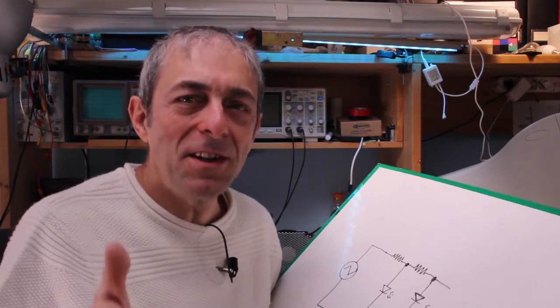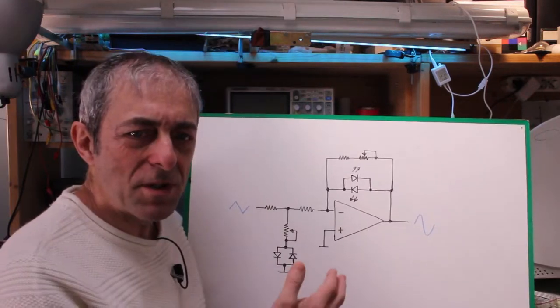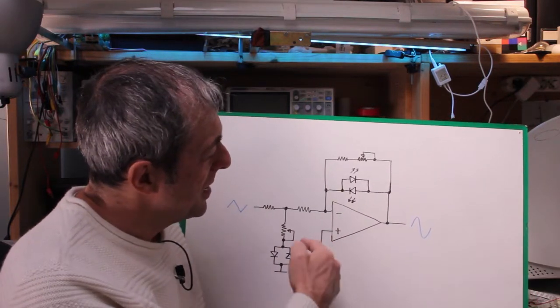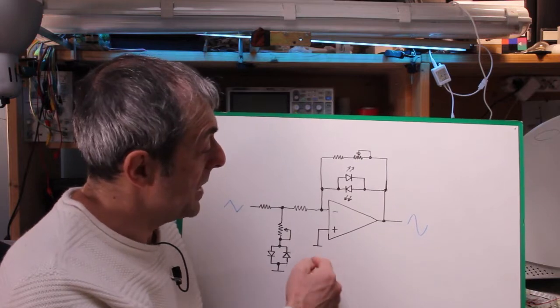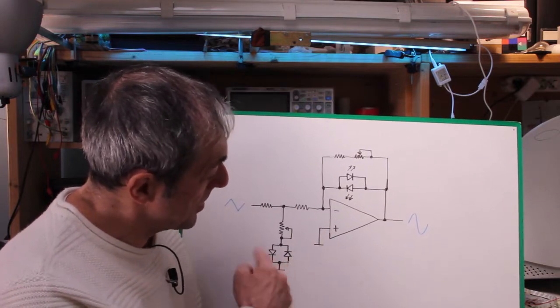Germanium diodes are hard to get nowadays, so to make my own wave shaper I tried a slightly different path. My secret is an operational amplifier as a buffer and a shaper, and I used a couple of silicon diodes...